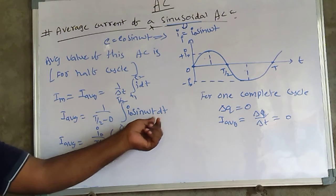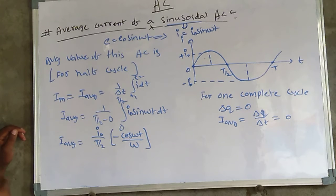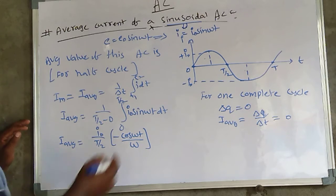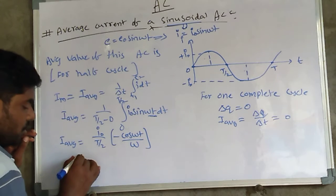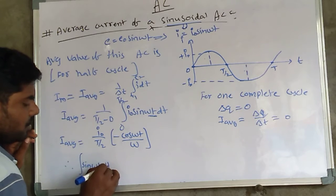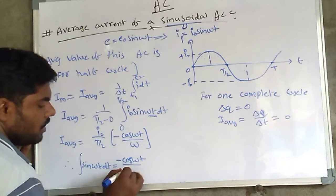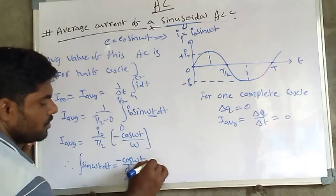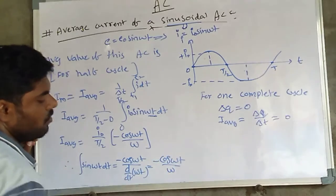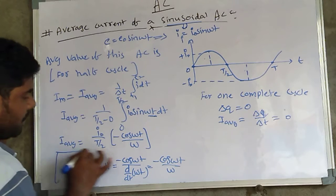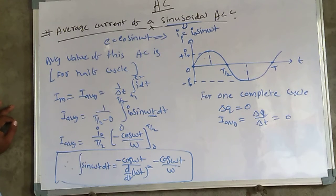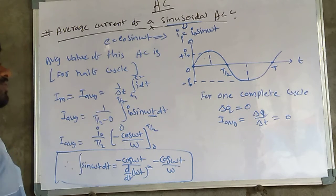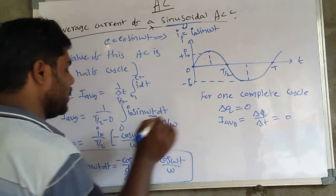The integral of sin(ωt) dt is −cos(ωt)/ω. This is because there is a composite function, so the integral is divided by the derivative of the inner function ω. So the mathematical formula is: integral of sin(ωt) dt = −cos(ωt)/ω. The limits are from 0 to T/2, and since T = 2π/ω, T/2 = π/ω.